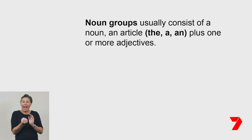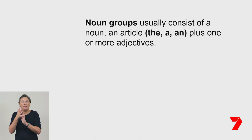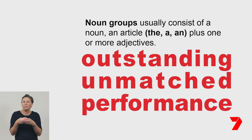Do you remember some of the persuasive language techniques used in advertising? Advertisers can use noun groups to connect descriptive words and the product. Noun groups usually consist of a noun, an article like 'the', 'a' or 'an', and one or more adjectives that give more information about the noun. Noun groups like 'an outstanding unmatched performance' or 'massive turbojet power' make us think that the product must be very impressive.